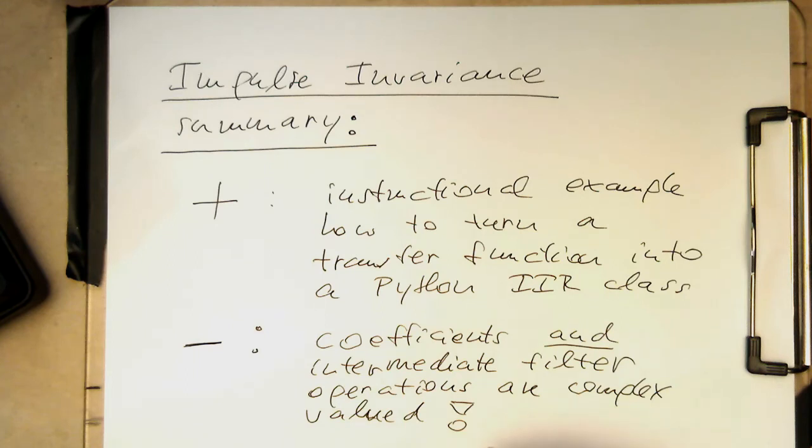And that's obviously a very negative thing because nobody wants to do complex calculations, for example on a microcontroller. Therefore it's not very practical, so we need to move on to more practical implementations where the coefficients and intermediate filter results are both real valued, that we can go back to standard floating point numbers or even just integer numbers.